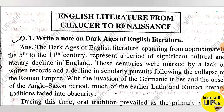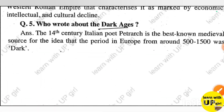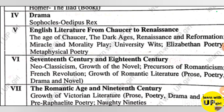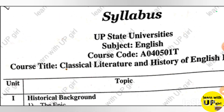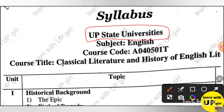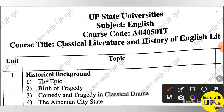Hello everyone. In today's video we are going to study the dark age of English literature. I would like to tell you which syllabus this topic belongs to. Everyone can see these questions — very short and short questions. This is UP State University BA 5th Semester, 3rd Year, 5th Semester. The syllabus is English Literature Paper 1st: The Classical Literature and History of English Literature.